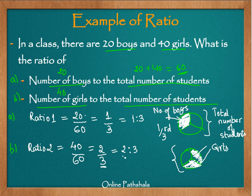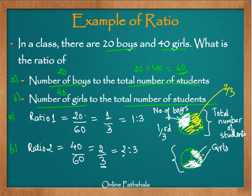These 2 parts represent the girls. In fact, just by looking at this, we know that one-third are boys and the remaining 2 parts — 2 by 3 — are girls. So the white colored part represents the girls, which is two-thirds of the total number of students, and one part is the number of boys, which is one-third. This is another way of representing ratio and how we use fractions to represent ratios.